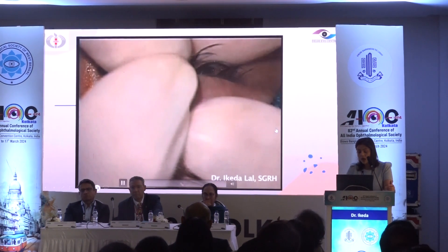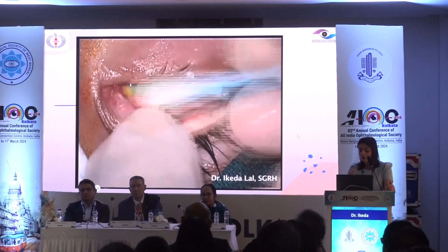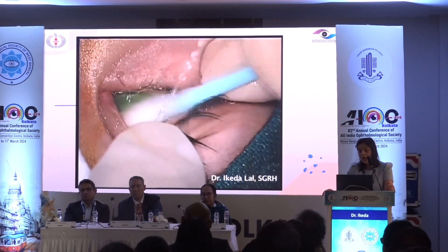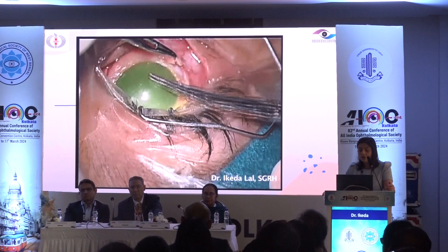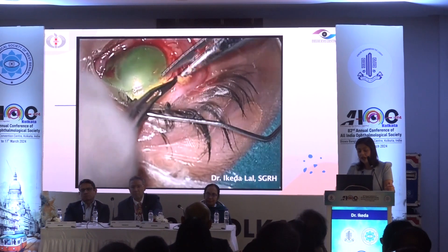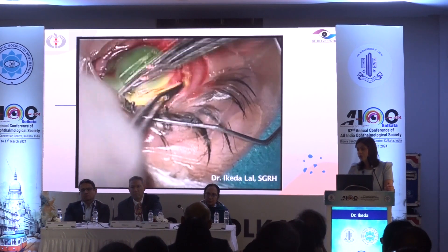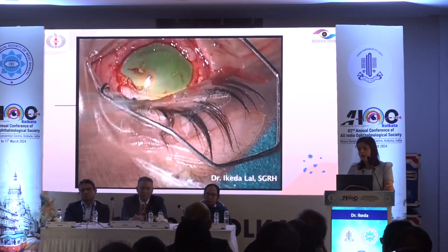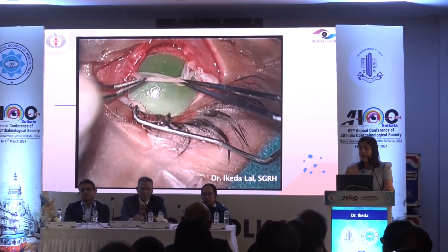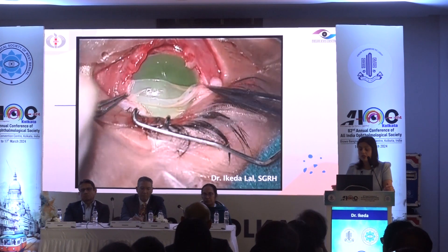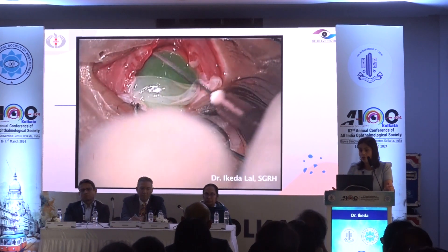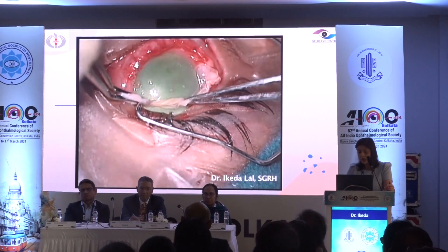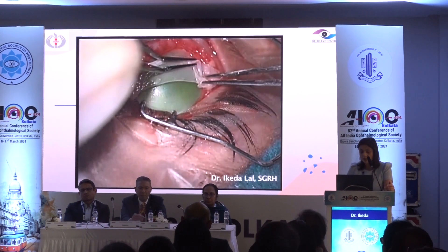This case is an ocular surface thermal burn. Here we need to remove the necrotic tissue on the surface, as it will inhibit healing. In some of these cases, tenonplasty or advancement of Tenon's capsule helps promote vascularization. Necrotic tissue must be removed, and in this case it was followed by an amniotic membrane graft and a complete tarsorrhaphy.